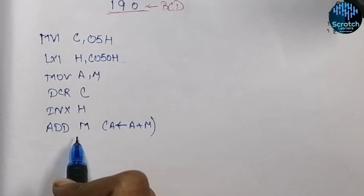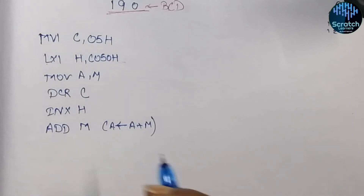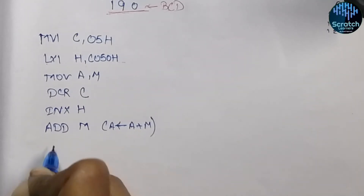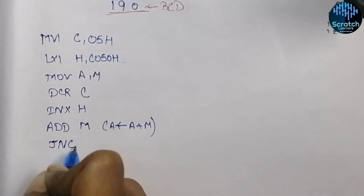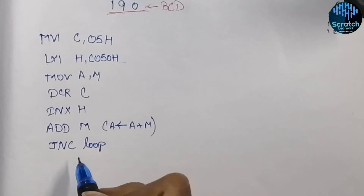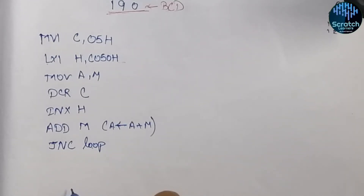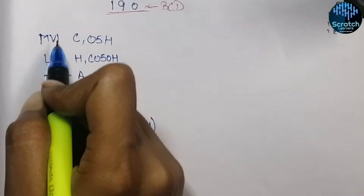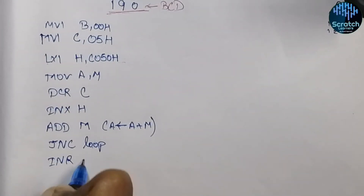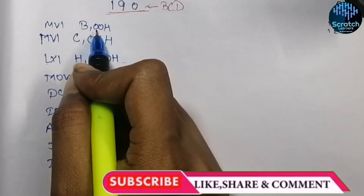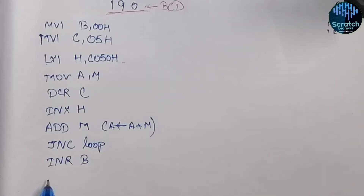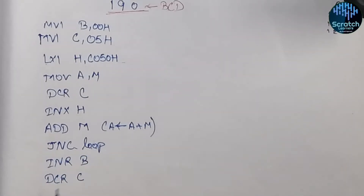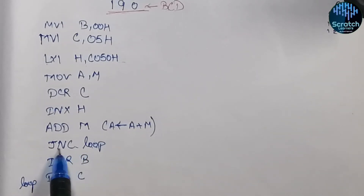Now we have the result of adding the first two numbers. After addition, a carry may or may not be generated, so we must account for that. Use JNC to jump to a loop location if no carry is generated. But if a carry is generated, we need to store that carry — so we increment the B register, making B equal to 1 when a carry occurs. Then we decrement C.